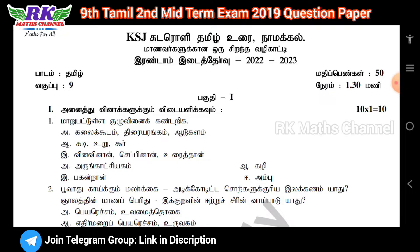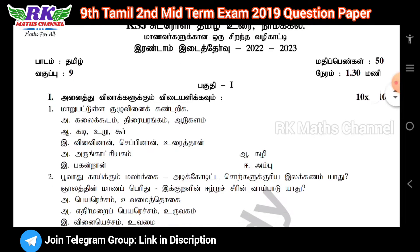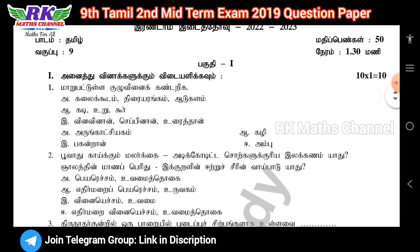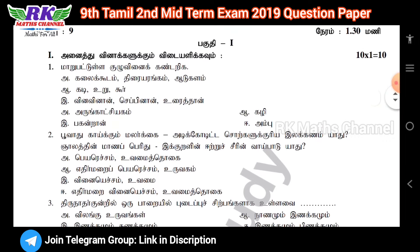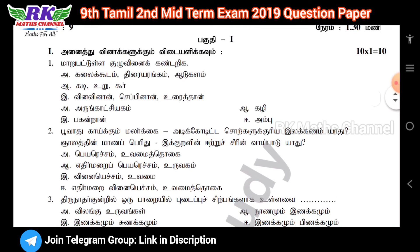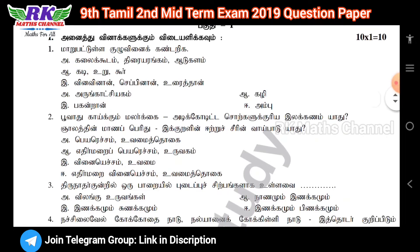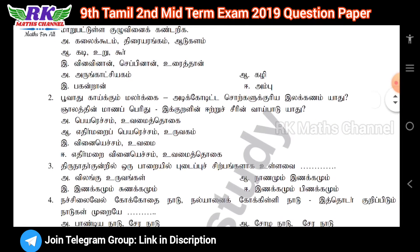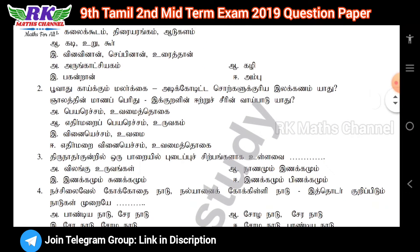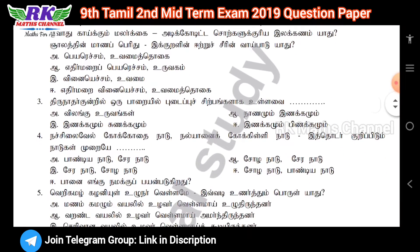So if you have a question paper for 50 marks — first, Part 1: you can get 10 bits, that is 10 one-mark questions. So total 10 bits.